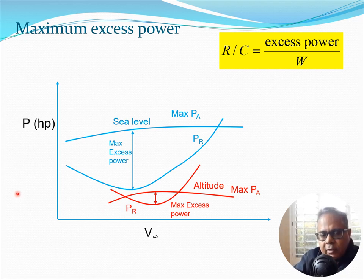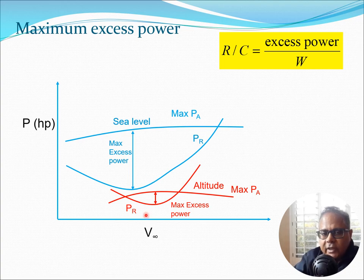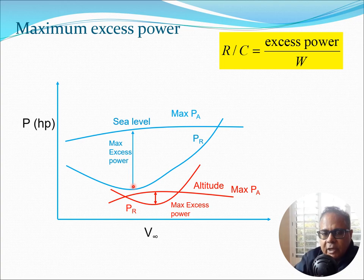Let's return to the power curve. Here I have plotted power versus velocity. In blue I have shown the sea level curves and in red I have shown the curves at a given altitude. Looking at the blue curves, you'll see the maximum PA curve — that is the available power — and the PR curve is the power required. The difference between these two is the excess power at a particular flight speed. This excess power keeps changing depending on your flight speed, and there is a particular velocity where you have maximum excess power, corresponding to which you can calculate the maximum rate of climb.